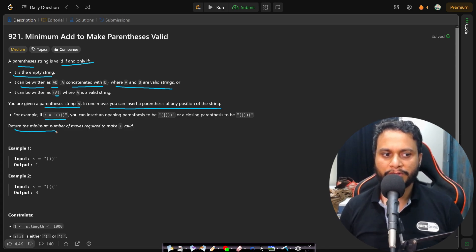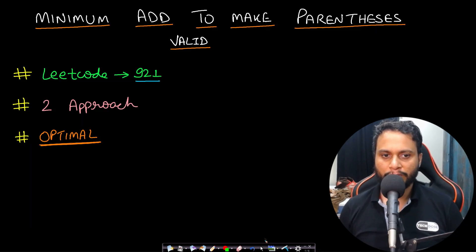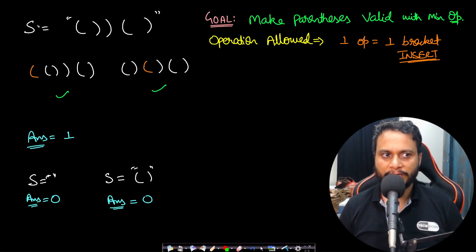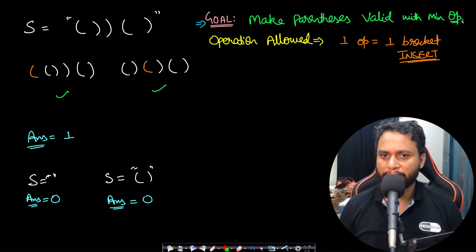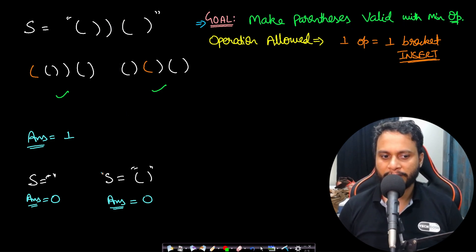We need to return the minimum number of moves required to make S valid. Let's look at an example. If the string is already valid, we do not need to do any operation and our answer will be zero.